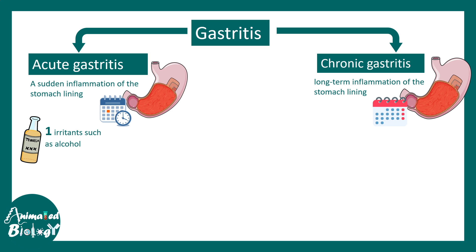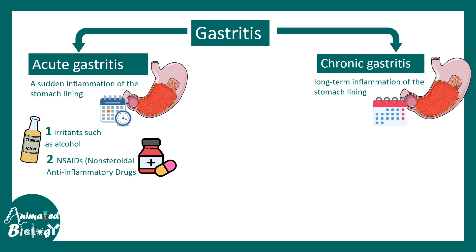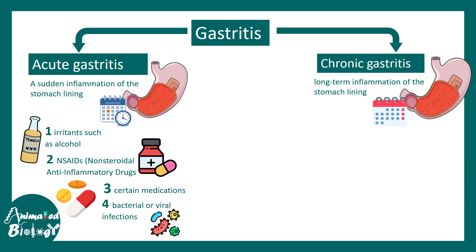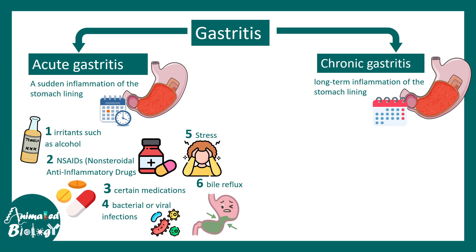The causes of acute gastritis include irritants such as alcohol, non-steroidal anti-inflammatory drugs, and other medications which might evoke inflammation. There could also be infections like bacterial or viral infection, excessive stress, or bile reflux — all of which can contribute to acute gastritis.